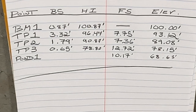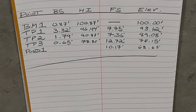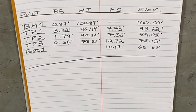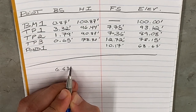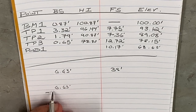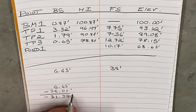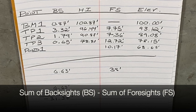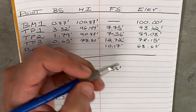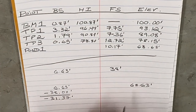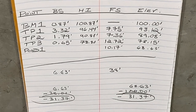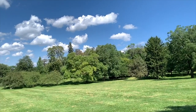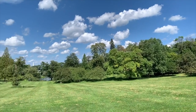This completes our leveling notes, but before wrapping up we need to do a math check to make sure we made no mistakes. Before submitting the leveling notes, we add all back sights and all foresights, then subtract the sum of foresights from the sum of back sights. We also take the finished elevation and subtract the starting elevation. If both numbers match, we're good to go — this ensures the math is correct throughout the differential leveling process. In this case, we see that we lost a total of 31.37 feet from the top of the curb to Passion Puddle.